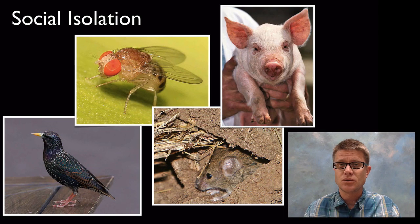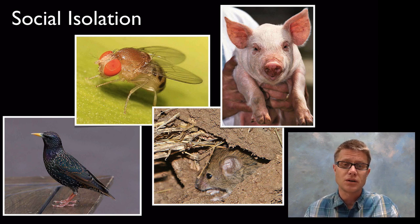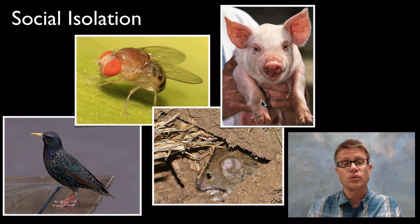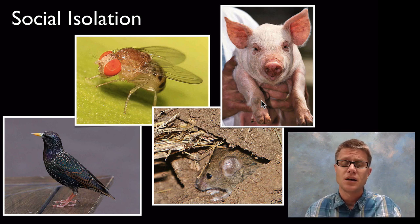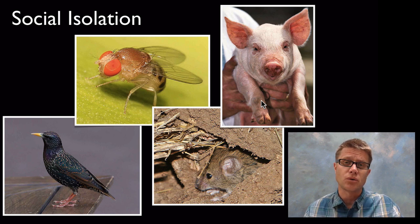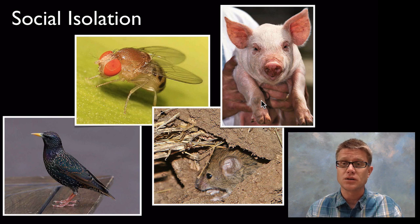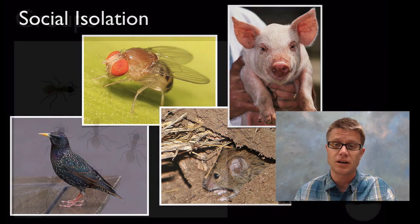Research is showing there's a really strong genetic component to social behavior. If we take organisms that live socially — from a starling to a fruit fly to a mouse to a pig — and keep them in social isolation, giving them enough food and water at the correct temperature, we find they start picking up diseases, they get sick, they don't do as well. There's something innate in social organisms where they do better living around or with other organisms. And humans are just like that.